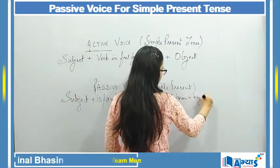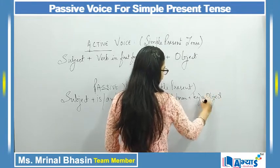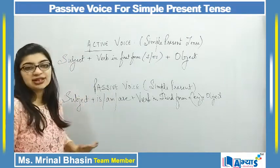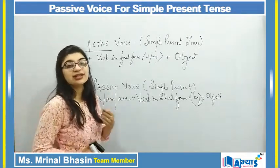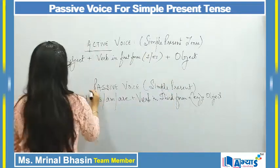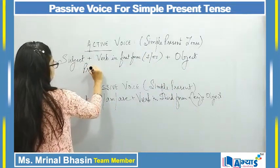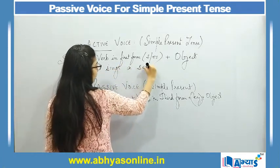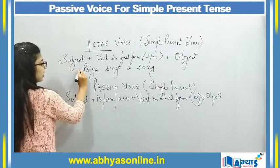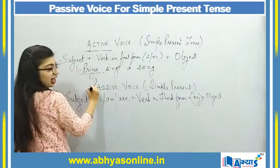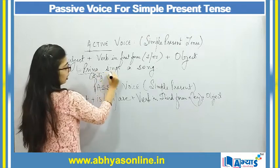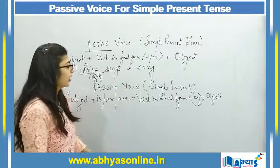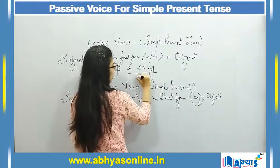The passive voice formula is: subject plus 'is/am/are' plus verb in third form, plus 'by', and then object. The 'by' is optional. To understand this better, let's take an example: 'Priya sings a song.' Here, Priya is the subject, 'sings' is the first form of the verb, and 'a song' is the object.